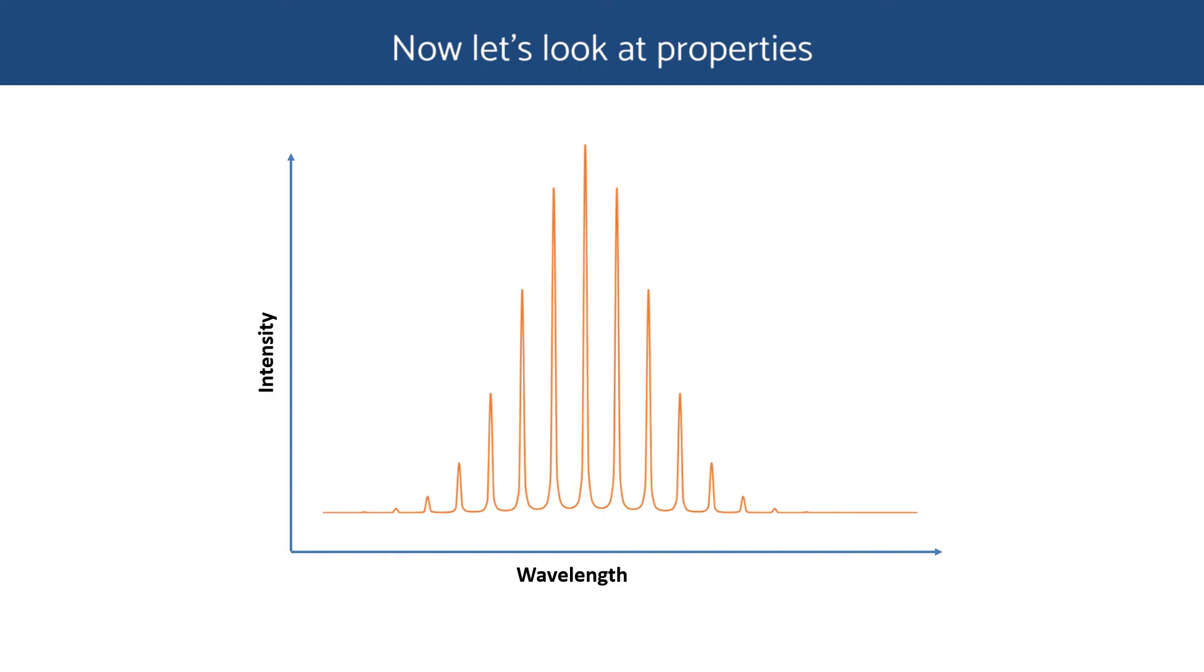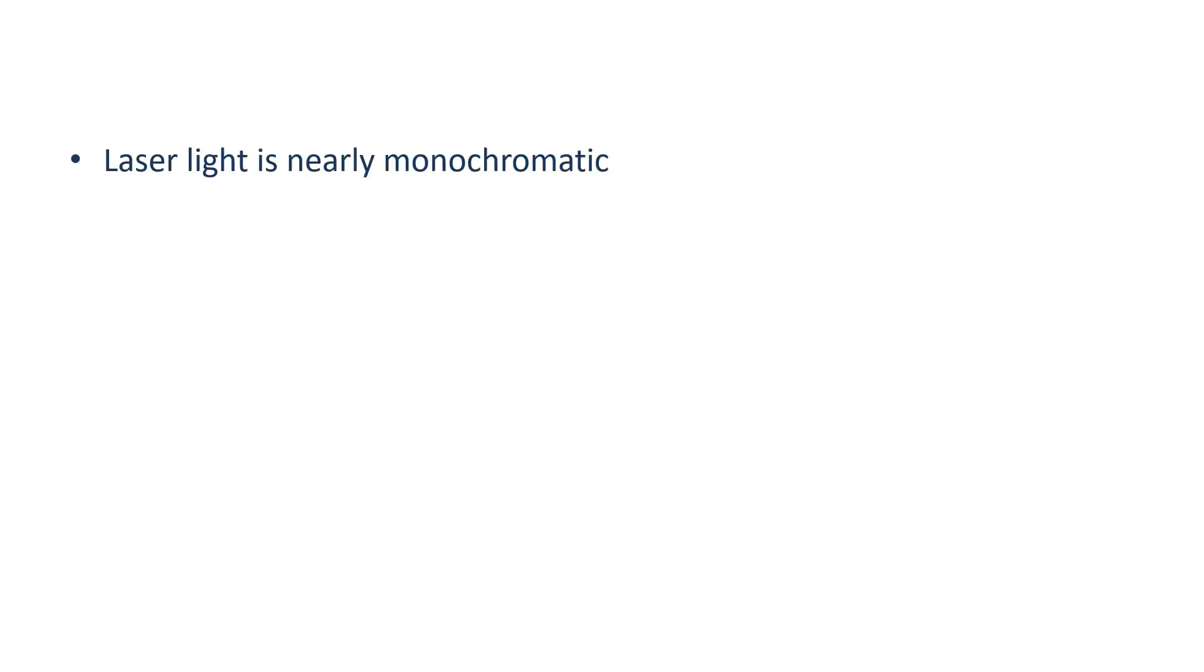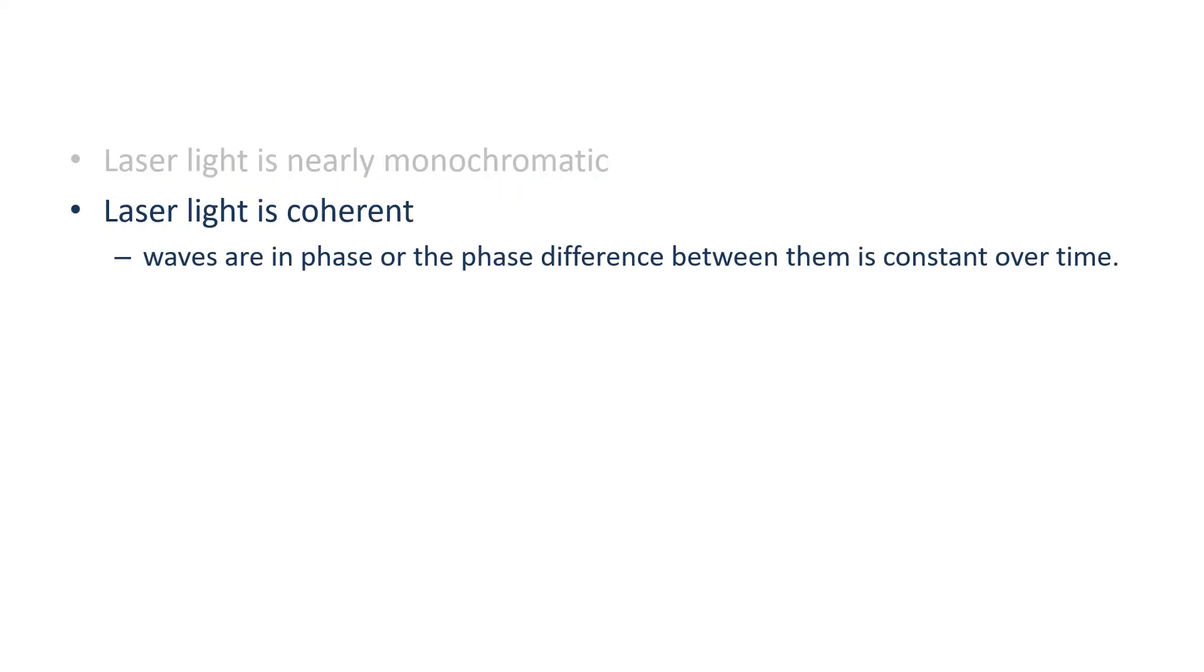Now, let's look at the properties of a Fabry-Perot laser light. Like all other lasers, Fabry-Perot laser light is nearly monochromatic. Light waves have almost the same wavelength. Laser light is coherent. In other words, waves are in phase, or if they're out of phase, the phase difference between them is constant over a certain defined time.